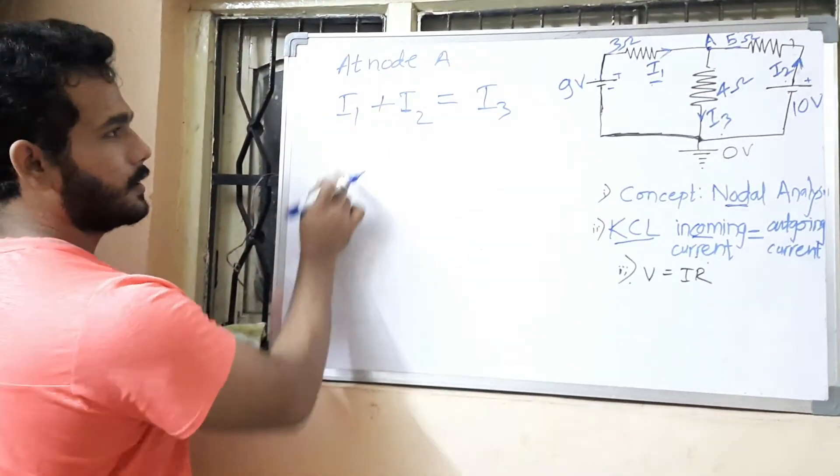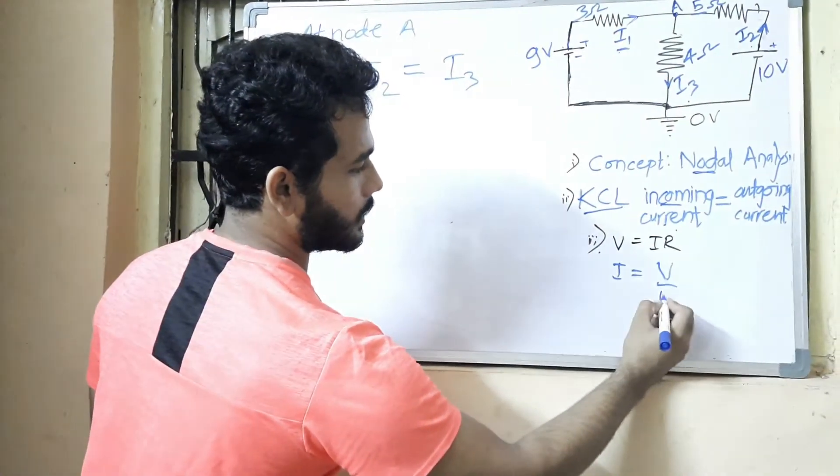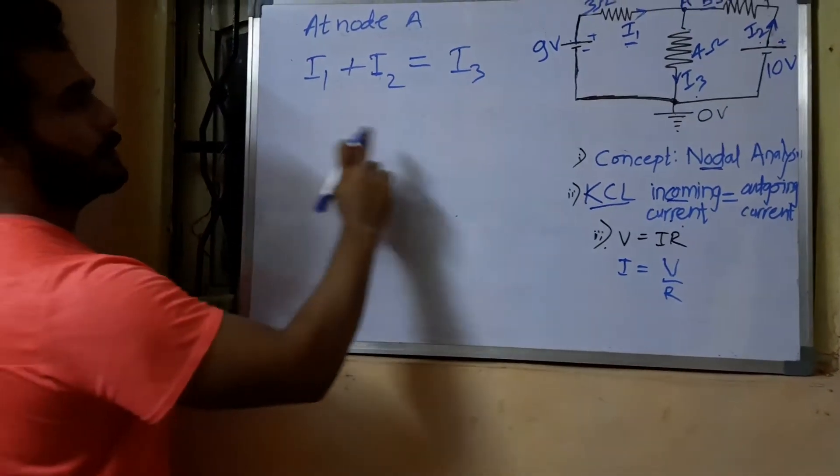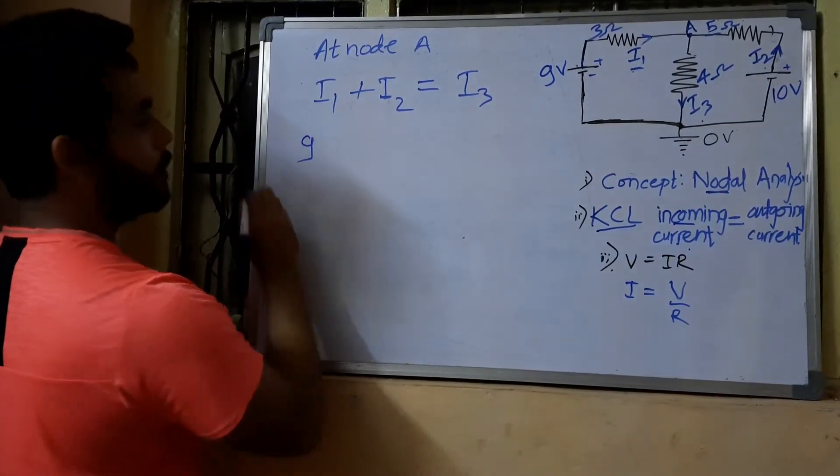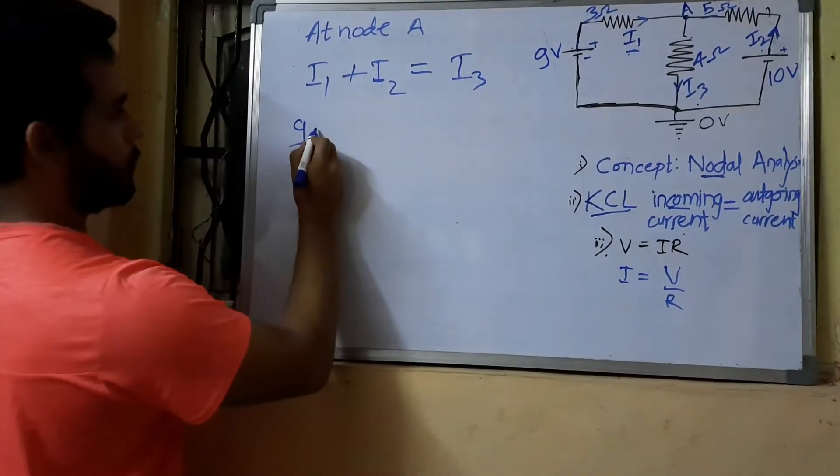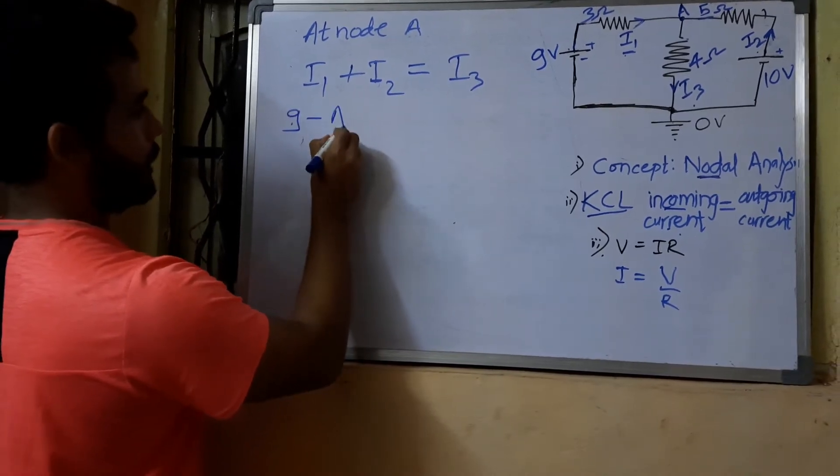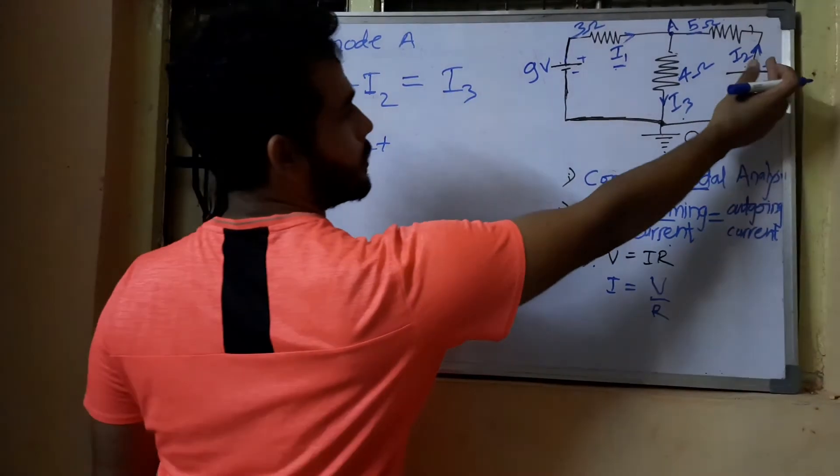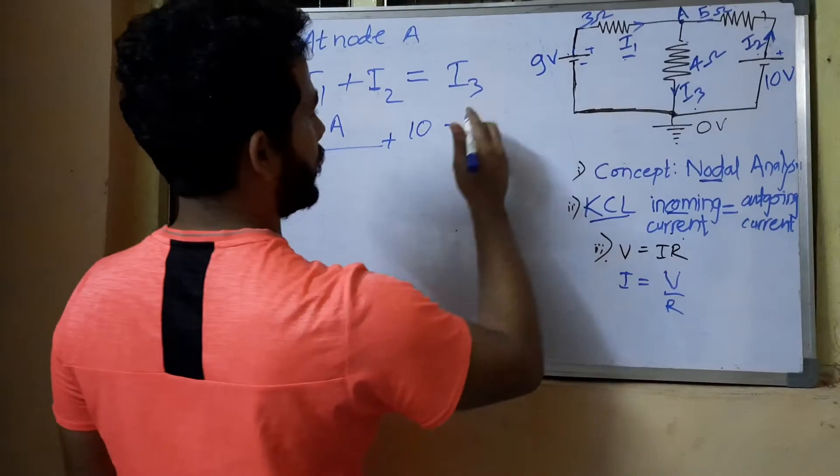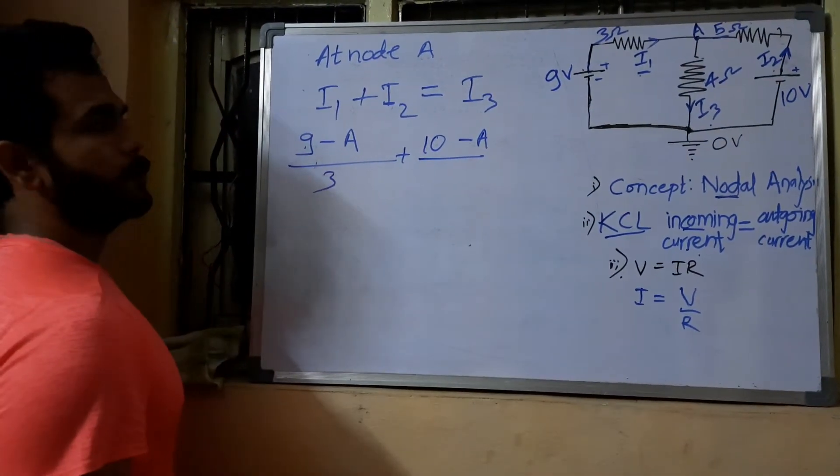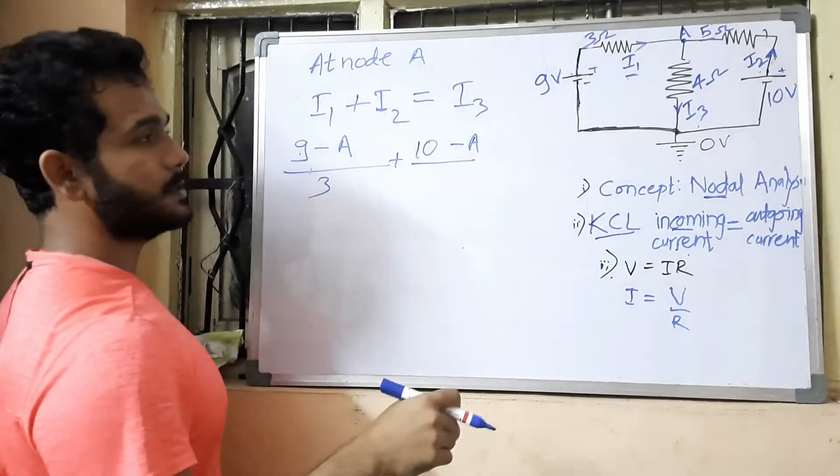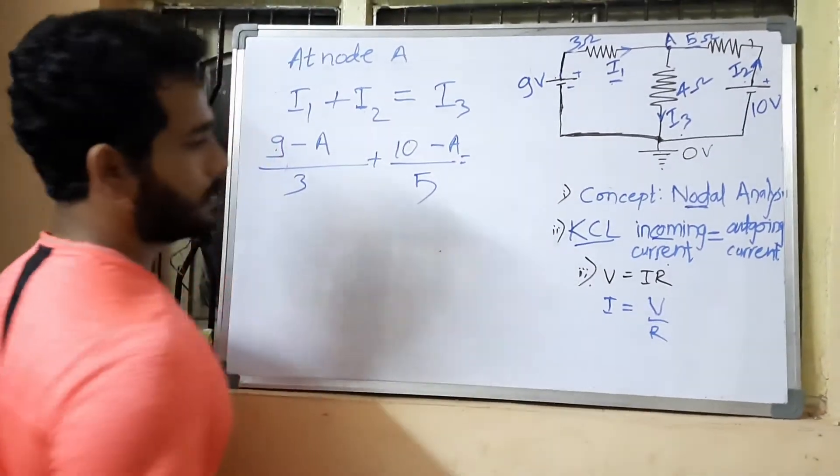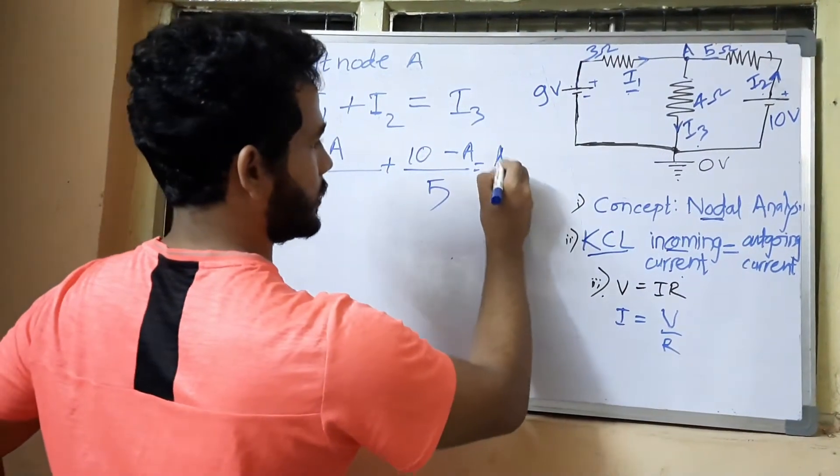This i1 can be written as i equals V by R, the potential difference V divided by resistance. So i1 is written as 9 minus A upon 3 ohm, because current flows from higher potential to lower potential. Plus i2, higher potential 10 volt minus A, that is at lower potential, divided by 5 is equal to i3. Here higher potential is A minus zero.